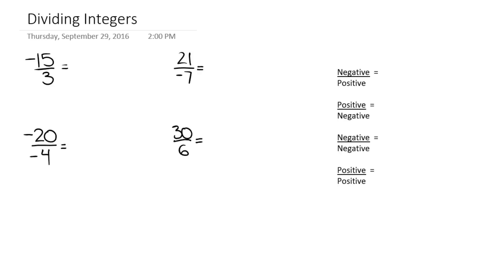Welcome back. We just got done talking about multiplying integers, and now we're going to take a look at the inverse operation of multiplying integers, which is dividing integers. Multiplication and division have the same idea of if we have an even number of signs in a problem, then it's going to be positive.